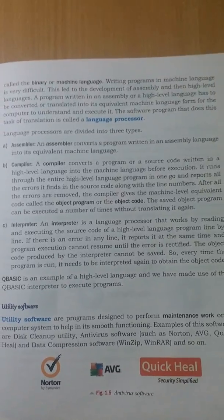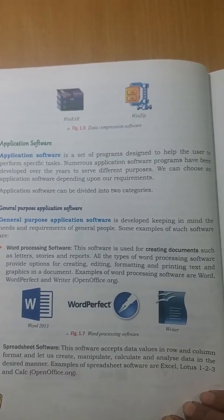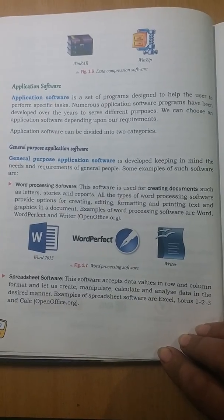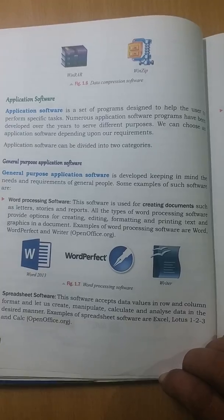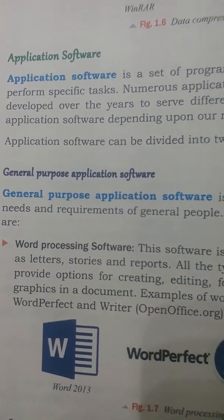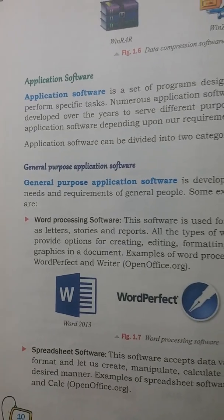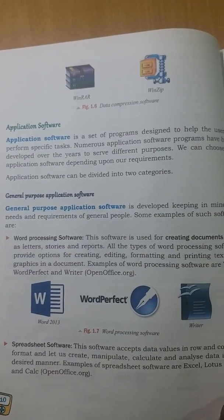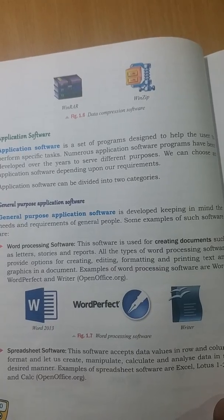Now we come to application software. Application software are software designed to help the user perform specific functions. For example, in an office, members need to write letters, and for that purpose they require word processing software. Word processing software allows you to process words — you can write letters, design question papers, and write stories. It allows us to write and process data in the form of text, and we can include text as well as pictures.